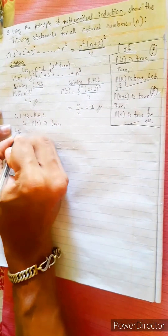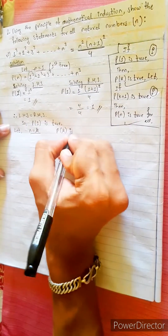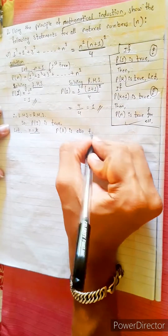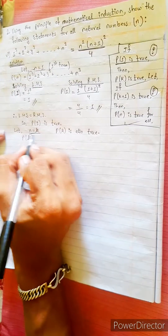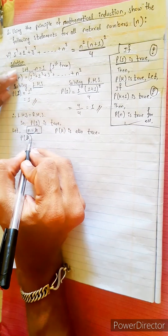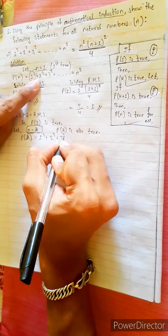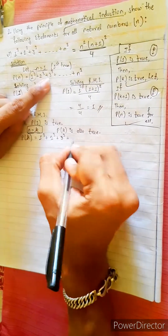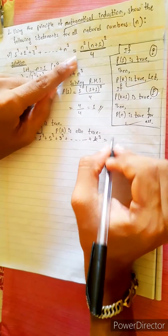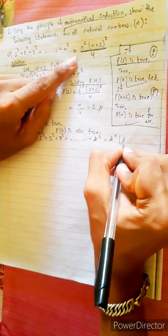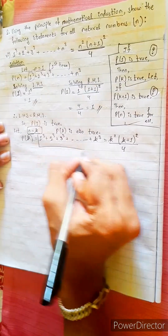p(k) is true. Let n equals to k. p(k) is also true. For n equals to k: 1 cubed plus 2 cubed plus 3 cubed plus dot dot dot plus k cubed equals to k squared (k plus 1) squared divided by 4.